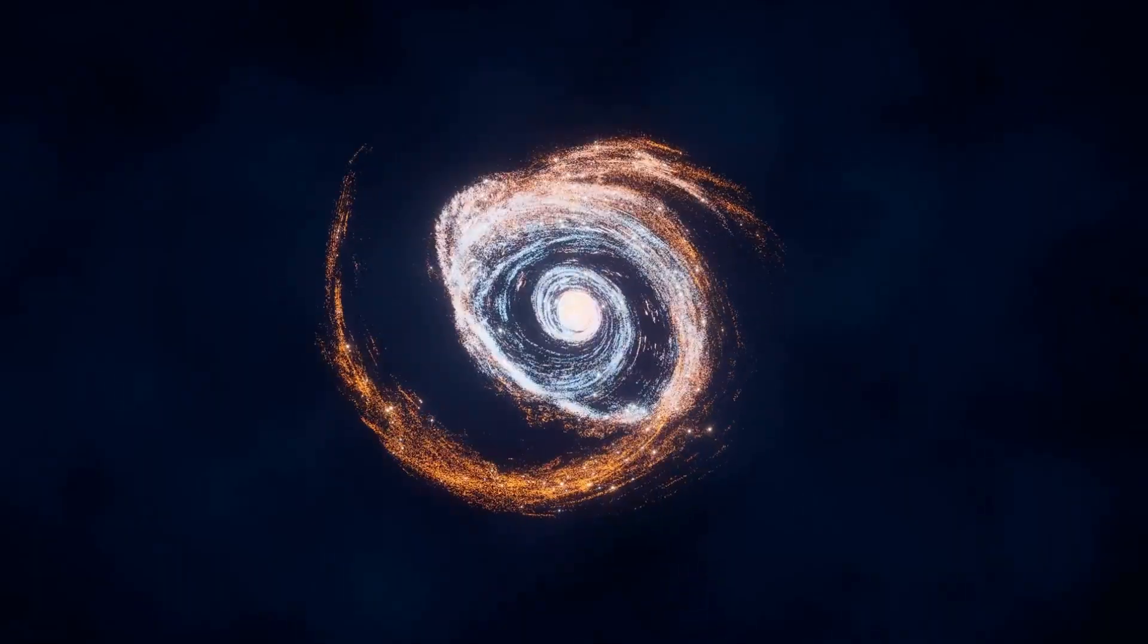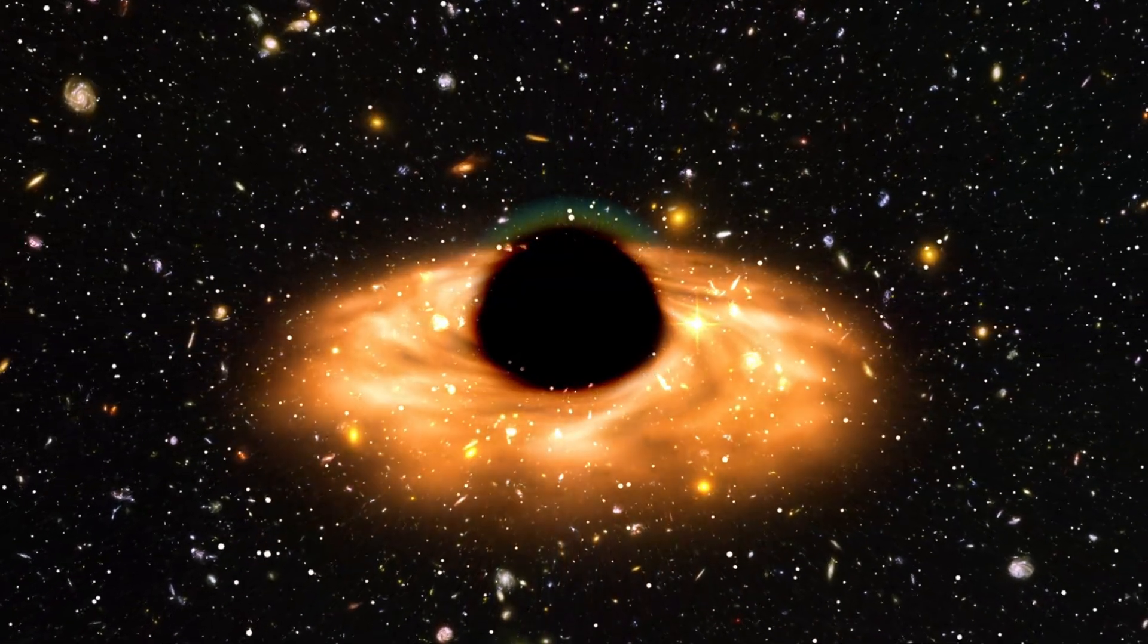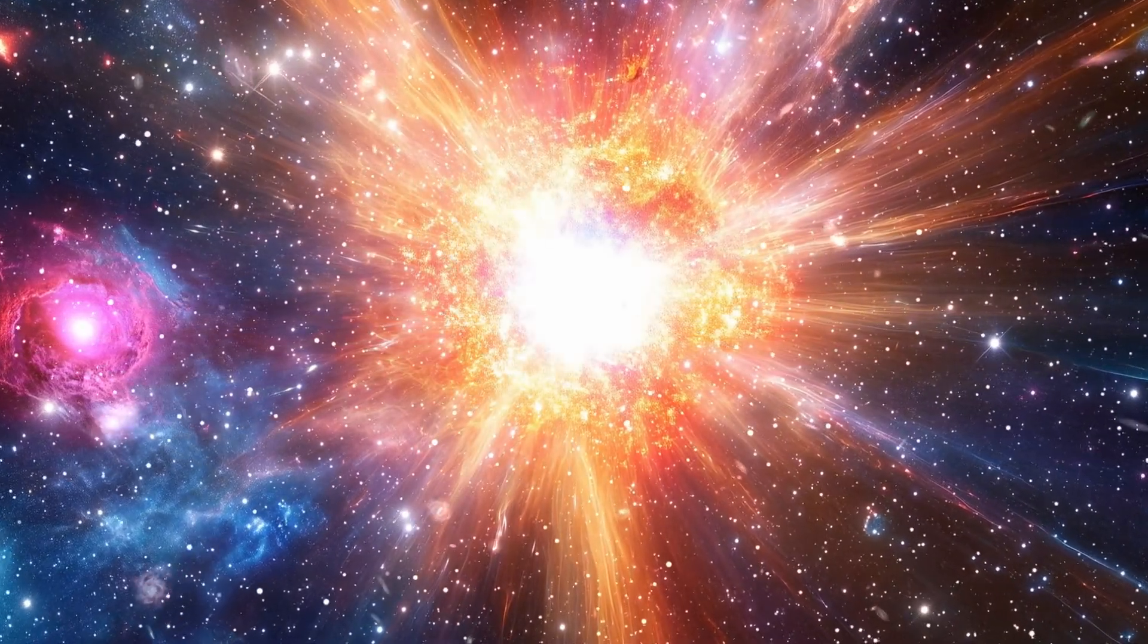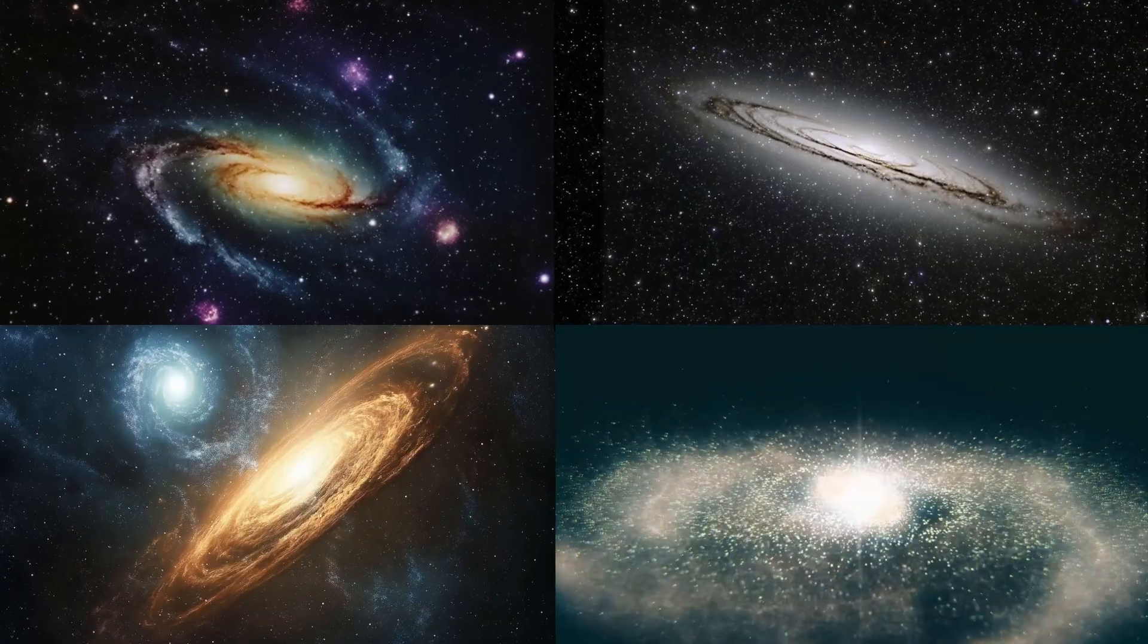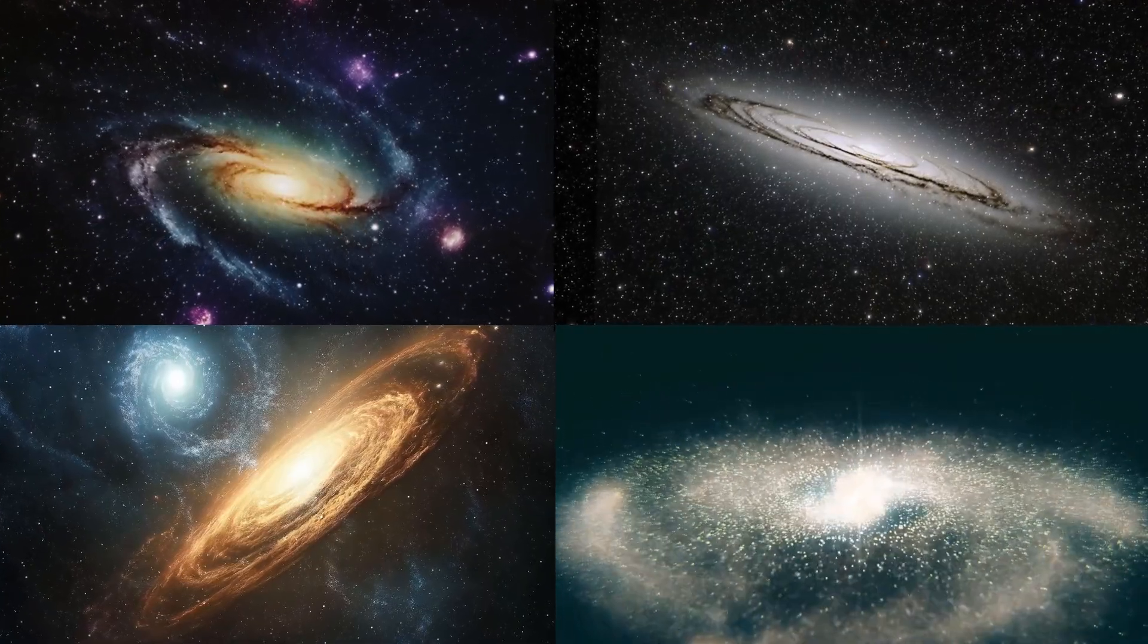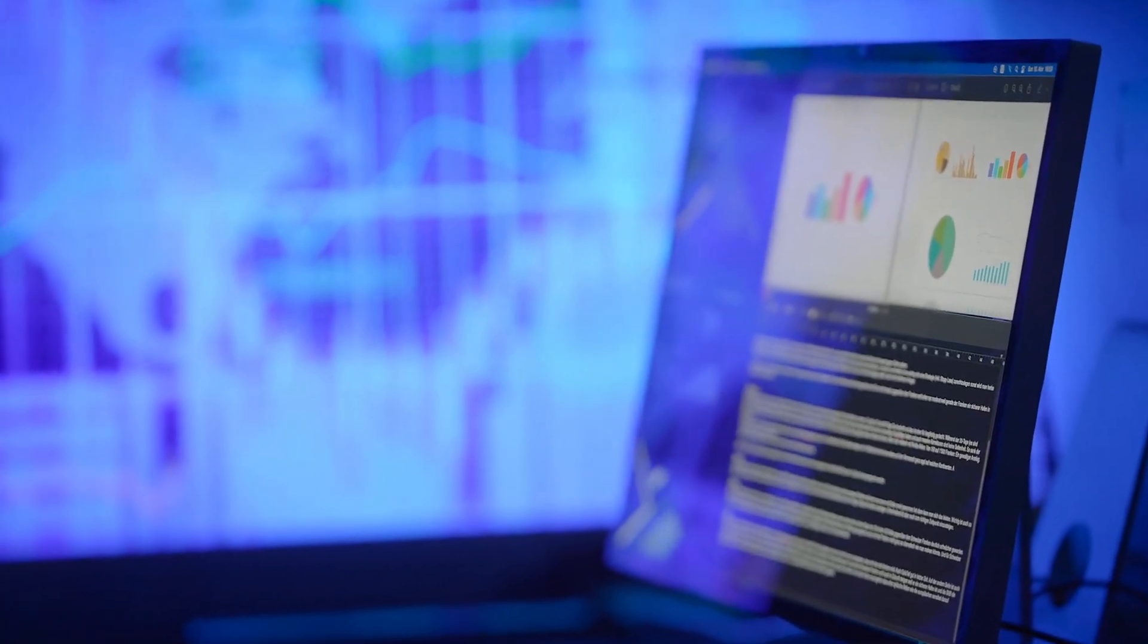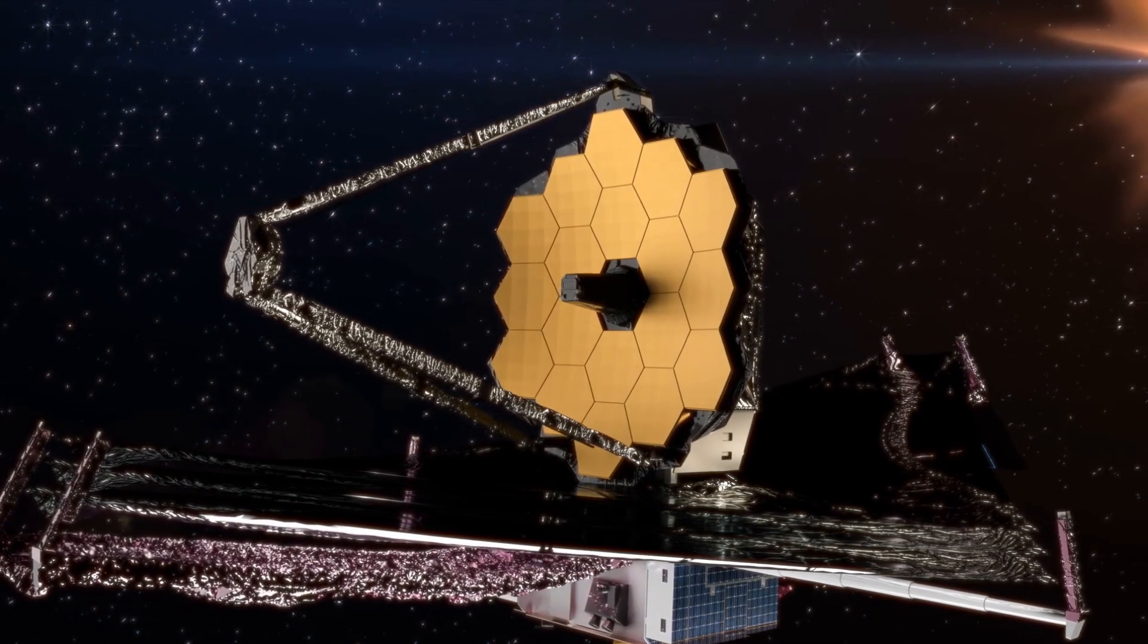Some even show evidence of spiral structure. Others contain black holes weighing in at a billion solar masses at a time when stars themselves should have just begun to shine. If these galaxies are as old as they appear, our cosmic calendar is wrong. If they're younger, our instruments are flawed.